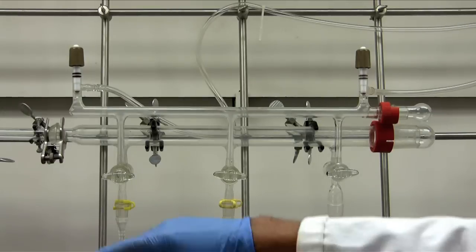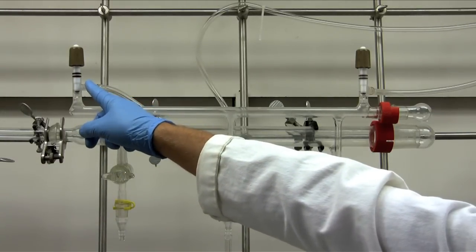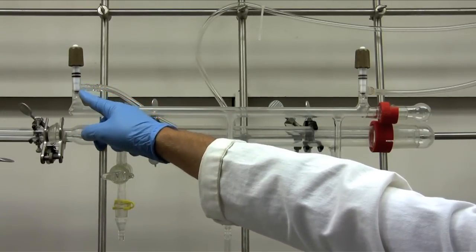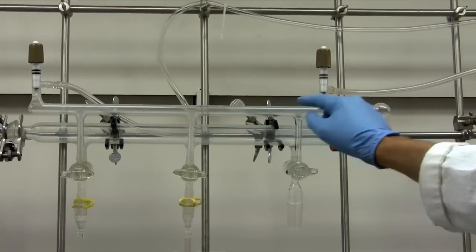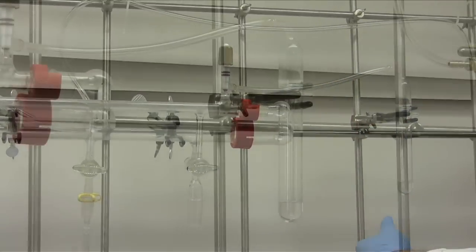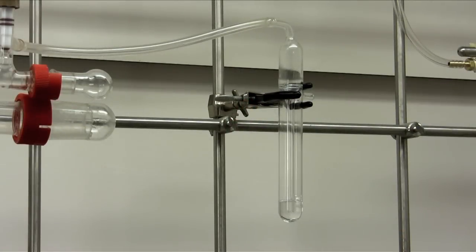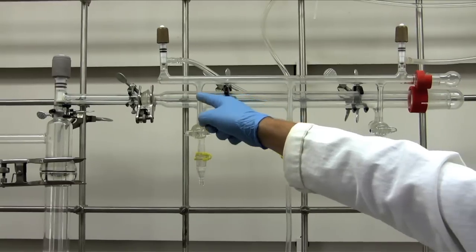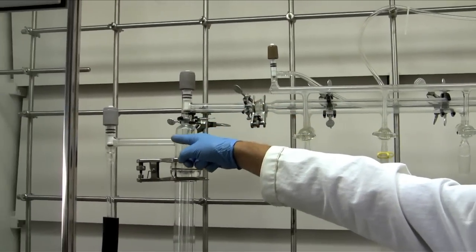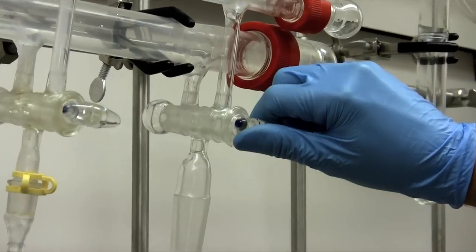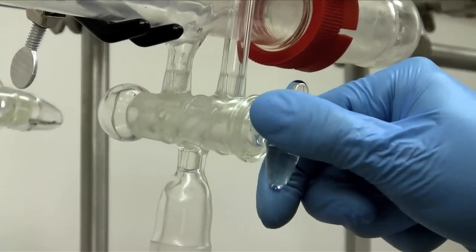The Schlenk line is designed to allow working under inert atmosphere. It's built from two parallel glass tubes. One tube is connected to an inert gas, and the gas is constantly running through the tube and exiting via a bubbler. The other tube is connected to a vacuum pump. The valves allow switching between vacuum and inert gas.